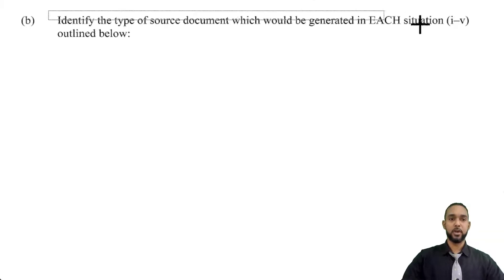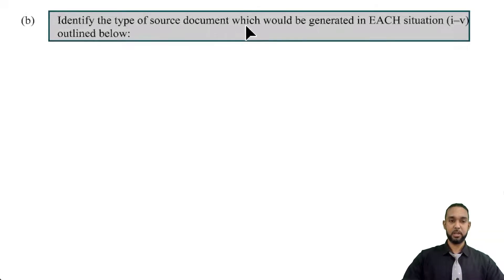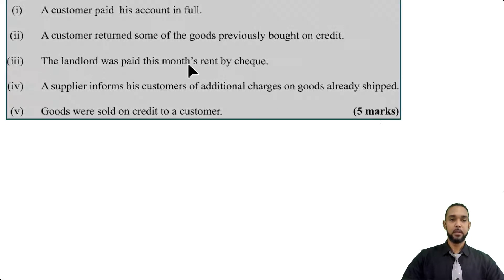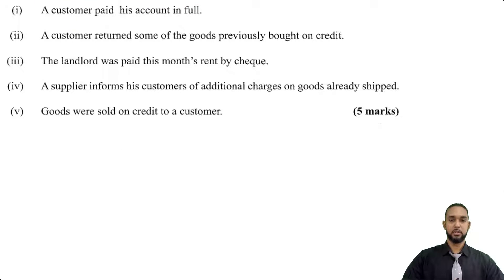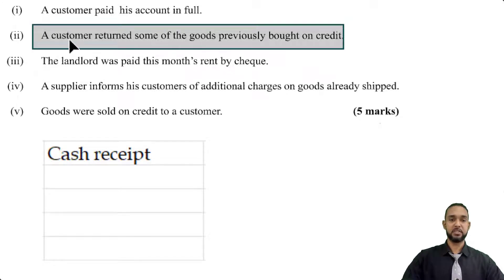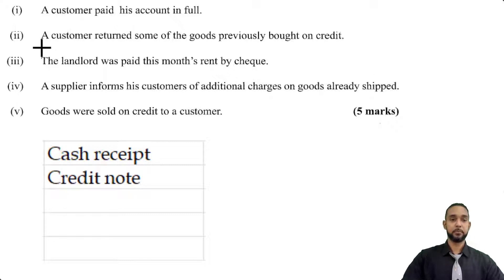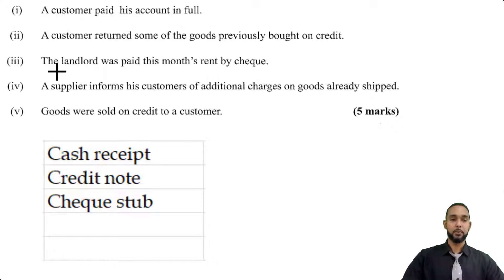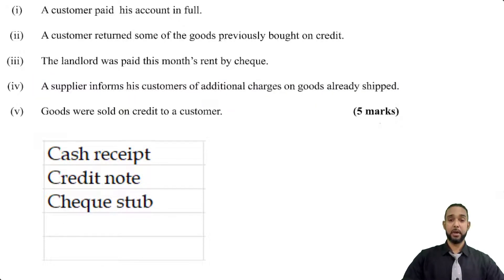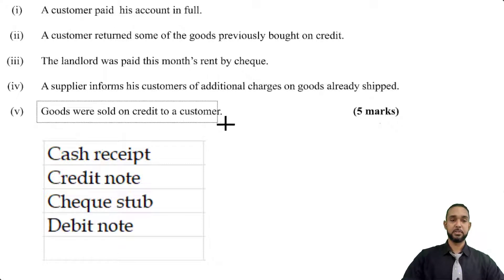Let's take a look at part B. We need to identify the type of source document which would be generated in each situation, one to five. Let's take it one by one. A customer paid his account in full — we issue a cash receipt. A customer returns some of the goods previously bought on credit — that's going to necessitate a credit note. The landlord was paid this month's rent by check — you can have the actual check or the check stub; the slightly more technically correct term is the check counter form. A supplier informs his customers of additional charges on goods already shipped — that's going to require a debit note. And goods were sold on credit to a customer — that is simply a sales invoice.